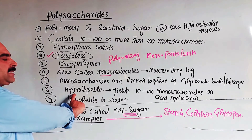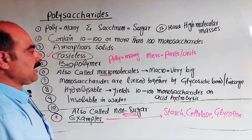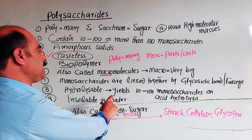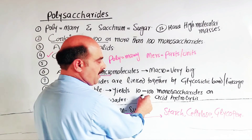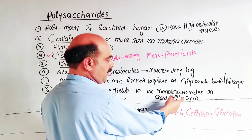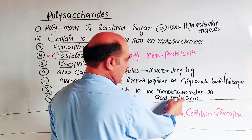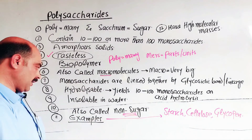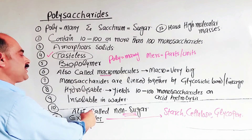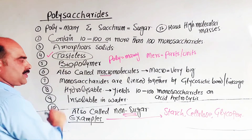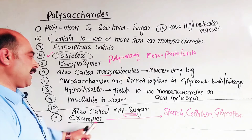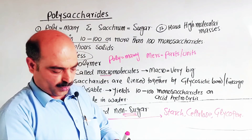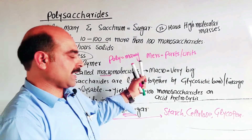These are also called macromolecules — 'macro' means very big. The difference between macromolecules and polymers is that polymers are formed from the combination of small units, while macromolecules are large molecules with high molecular masses. On acid hydrolysis, they yield 10 to 100 or more than 100 monosaccharides. They are insoluble in water and are also called non-sugars. Examples are starch, cellulose, and glycogen.